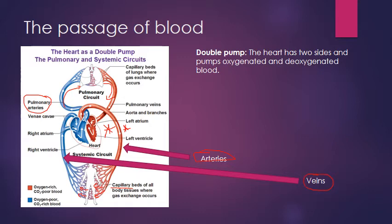Veins have valves to stop low-pressure blood from going backwards, and a wide lumen to carry blood back to the heart. The heart is called a double pump because it has two sides — one pumps oxygenated blood and the other pumps deoxygenated blood. On diagrams, the left side is shown in red (oxygenated) and the right side in blue (deoxygenated).